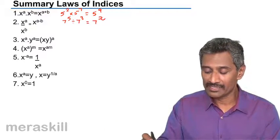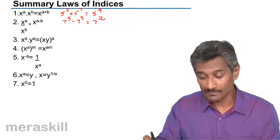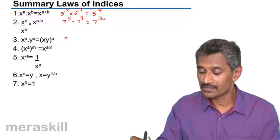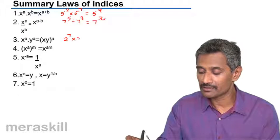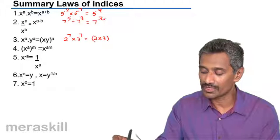x raised to a times y raised to a is x y raised to a. That is different bases, common index. Say two raised to seven times three raised to seven can be written as two times three the whole raised to seven.